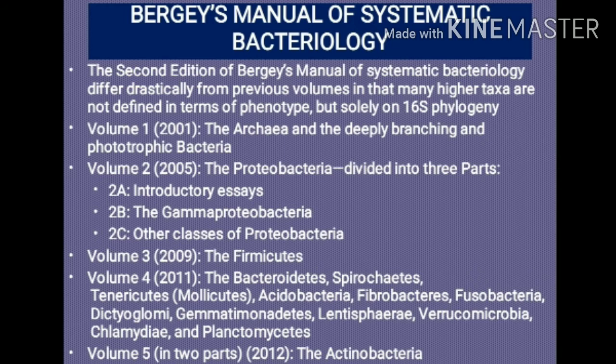Bergey's Manual of Systematic Bacteriology, 2nd edition, was published in 5 volumes: Volume 1 published in 2001, Volume 2 in 2005, Volume 3 in 2009, Volume 4 in 2011, and Volume 5 in 2012. Volume 1 contains archaea and deeply branching and phototrophic bacteria.